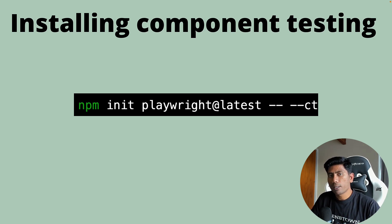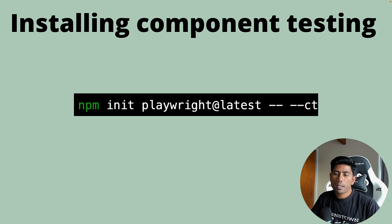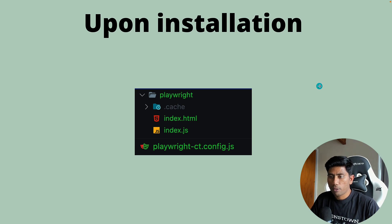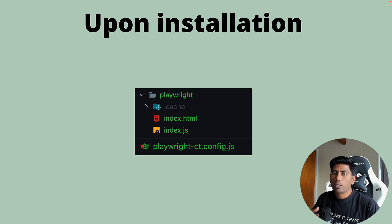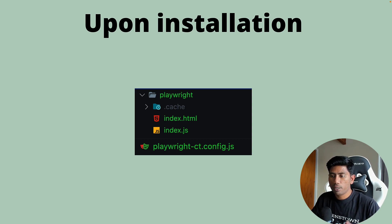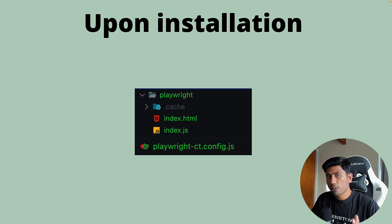This is a new thing that needs to be installed as part of Playwright's existing installation. Once you do that, you will see that a Playwright experimental package will be added in your dev dependency. This is basically like an initialization — once you do the init, you're going to have a bunch of files added.